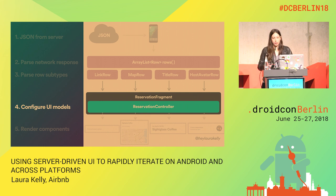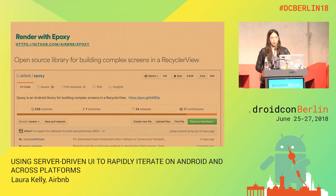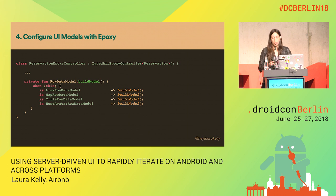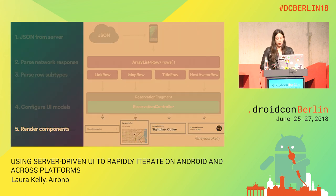Once those data models get parsed into subtypes, we pass them to our reservation controller. For our UI controllers we're using a library called Epoxy, which is a library we open sourced at Airbnb. It's for building complex screens in a RecyclerView, and it has a really nice declarative syntax that makes it easy to support a lot of different types of components and configure them based on what the API response looks like. In our controller, we have a big when statement that takes a base row data model, parses into what subtype it is, and calls a build model Kotlin extension. That extension creates a new component — for example, a basic row — passing in the title and an onClick listener. Once we've added those models to our Epoxy controller, we just render those components.